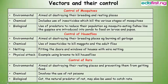Control of house flies. Environmental method: aimed at destroying their breeding places, for example burning all garbage. Chemical method: use of insecticides to kill maggots and the adult flies. Netting: fitting the doors and windows of houses with wire netting. Physical attack: for example, using brooms to kill house flies.